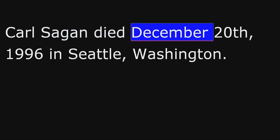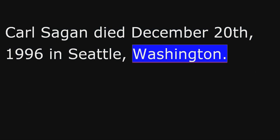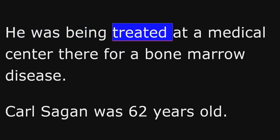Carl Sagan died December 20, 1996, in Seattle, Washington. He was being treated at a medical center there for a bone marrow disease. Carl Sagan was 62 years old.